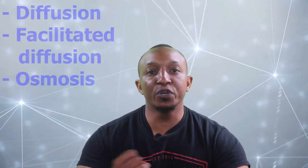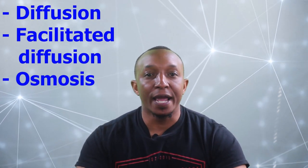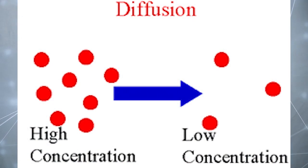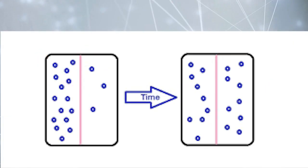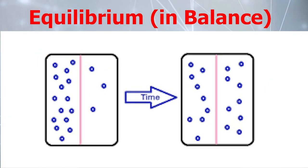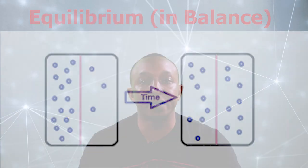There are three types of passive transport which include diffusion, facilitated diffusion and osmosis. Diffusion is a type of passive transport that moves small molecules across the cell membrane from an area of high concentration to an area of low concentration. Diffusion continues until the materials are in equilibrium on both sides of the cell.